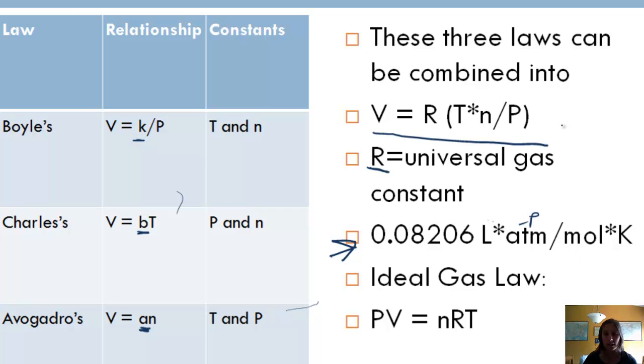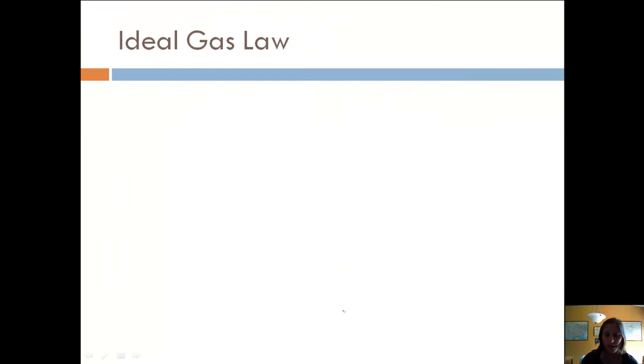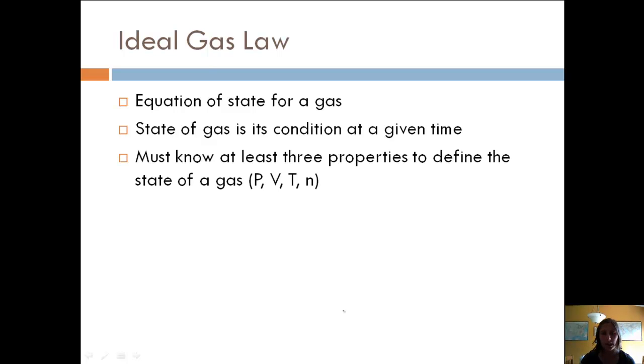We can rearrange this to get what's called the ideal gas law, and that is PV equals NRT. That's really the one you're going to want to know for sure. The ideal gas law is the equation of state for a gas. It's the state of a gas at a given time, so it gives information about the gas's condition.